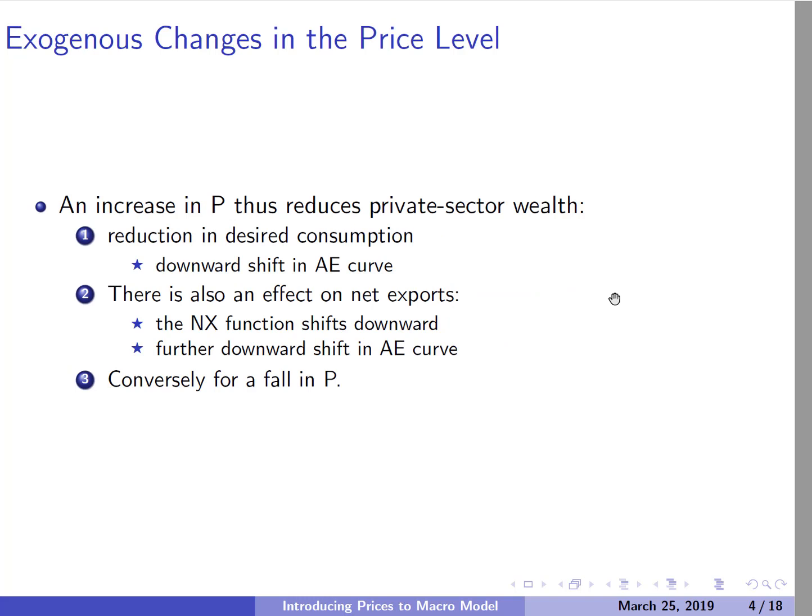An increase in the price level is going to reduce desired consumption. The value of money holdings has gone down, which means wealth has gone down. We know that wealth going down decreases the autonomous part of the consumption function - that little 'a' - so the whole AE curve is going to shift down. There's also going to be an effect in the foreign trade market. If the Canadian price level is going up, Canadian goods are relatively more expensive, which means exports are going down and the marginal propensity to import is increasing, so the AE curve function is shifting down.